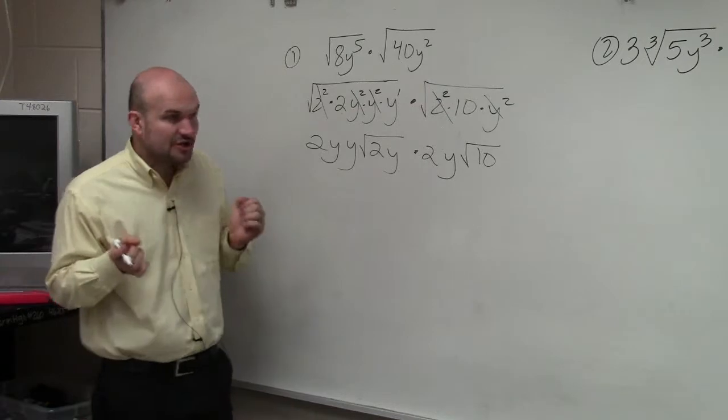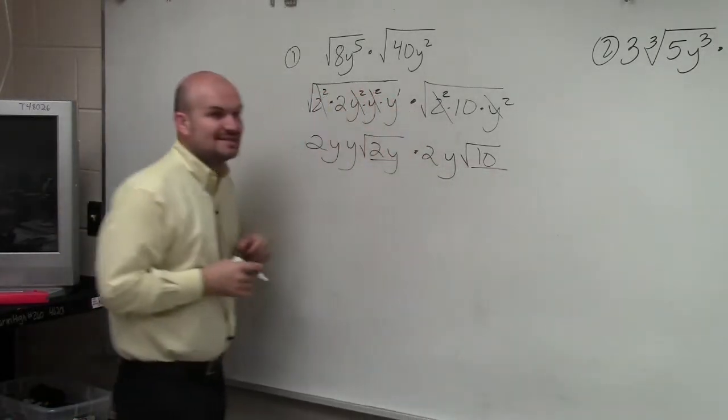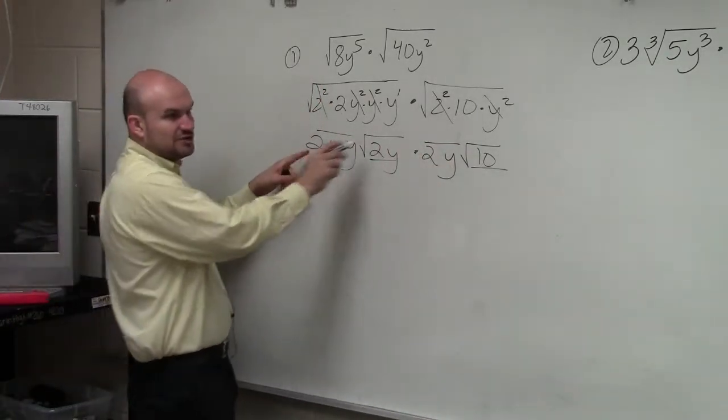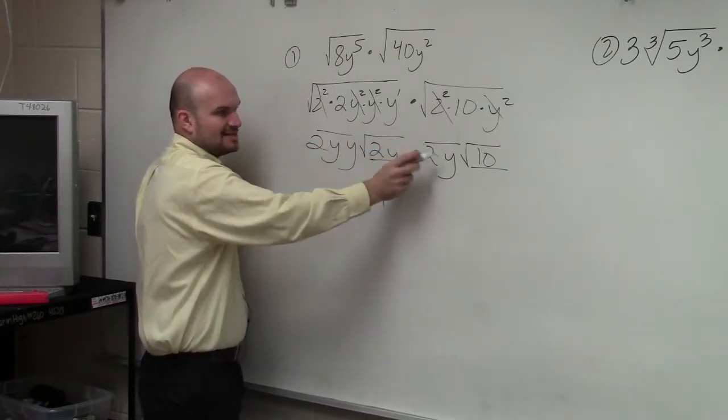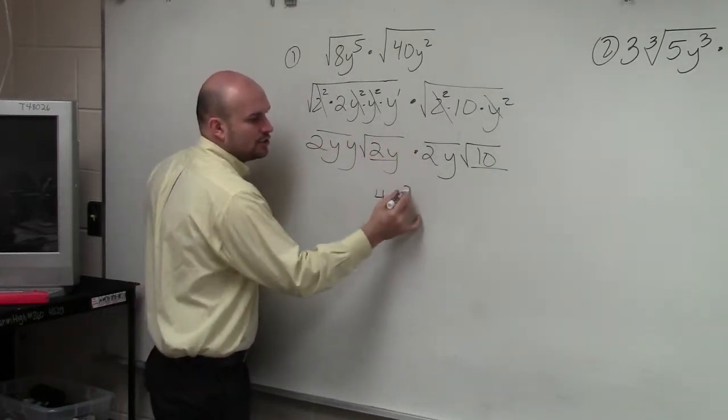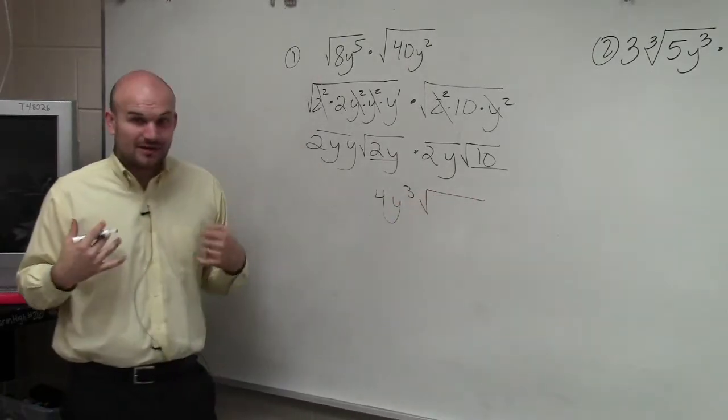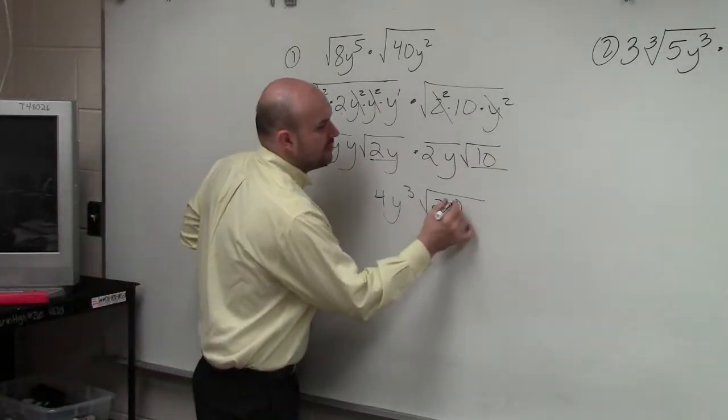Now, what we do is, based on my rules, we multiply what's inside the radicals and we multiply what's outside of the radicals together. So I have 2 times 2, which gives me 4. y times y times y is y cubed. Then, inside the radical, I'm going to multiply 2 times y times 10, which is 20y.